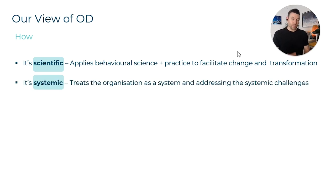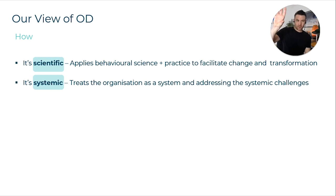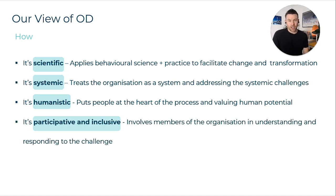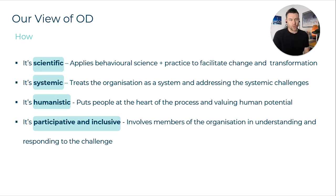We take a systemic approach, treating an organisation as a whole system and understanding the interdependencies throughout it. So if you change a process, it might impact an employee group elsewhere. It's really about understanding those interdependencies before making change. It's also humanistic — really focused on people and working towards people achieving their full potential through their work. It's also extremely participative and inclusive, working hard to involve members of the organisation in defining the challenge, understanding the organisation, and creating solutions.